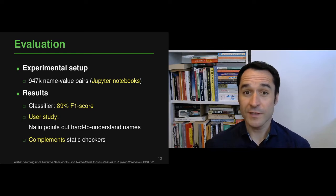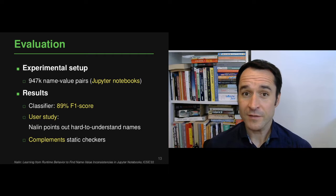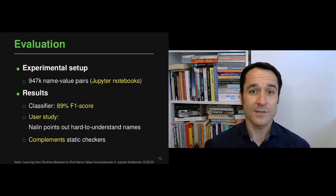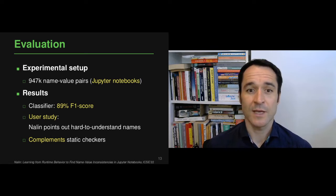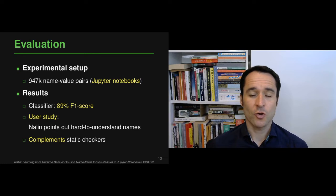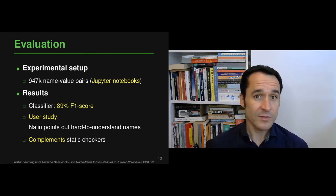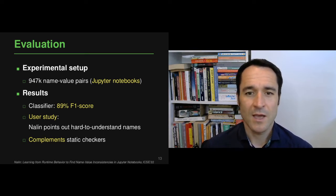We implemented this idea for Python and applied it to Jupyter notebooks, which are more or less self-contained and executable pieces of Python code. The classifier we train achieves an F1 score of 89%. We also show that Nalin's predictions of inconsistent name-value pairs overlap significantly with what software developers consider hard-to-understand names, demonstrated through a user study, and we compare Nalin to existing static checkers.